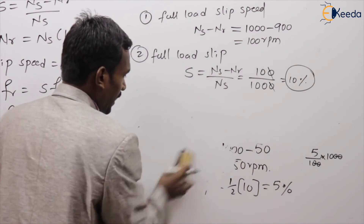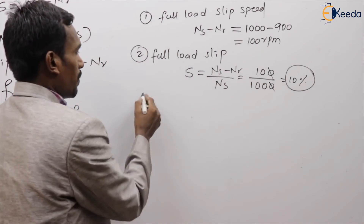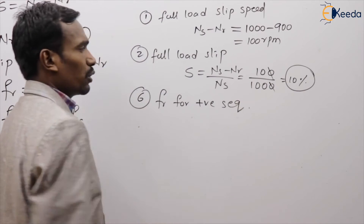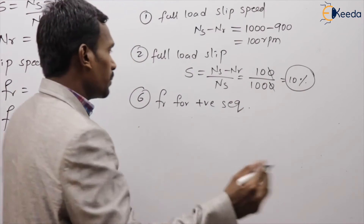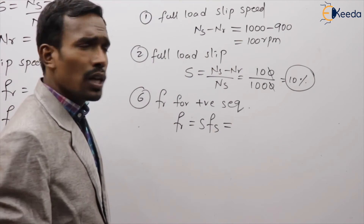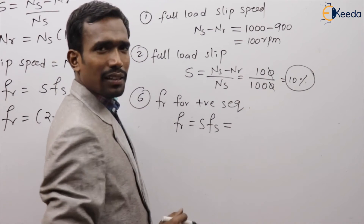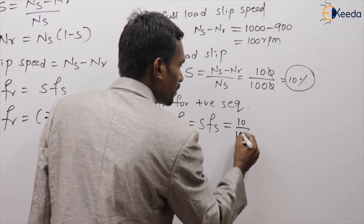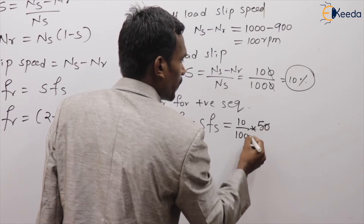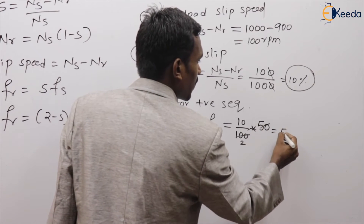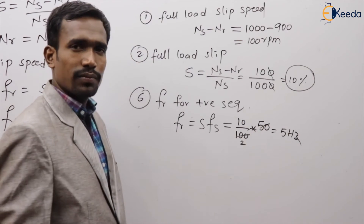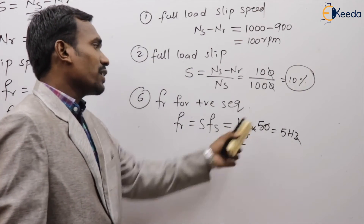Sixth question: rotor frequency for positive sequence. Fr equals S into Fs. My S value is 10% and supply frequency is 50 Hz. So 10% of 50 equals 5 Hz. The rotor frequency for positive sequence is 5 Hz.